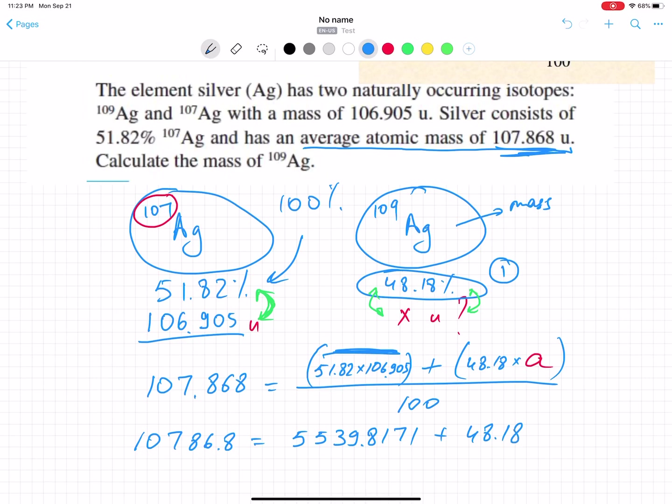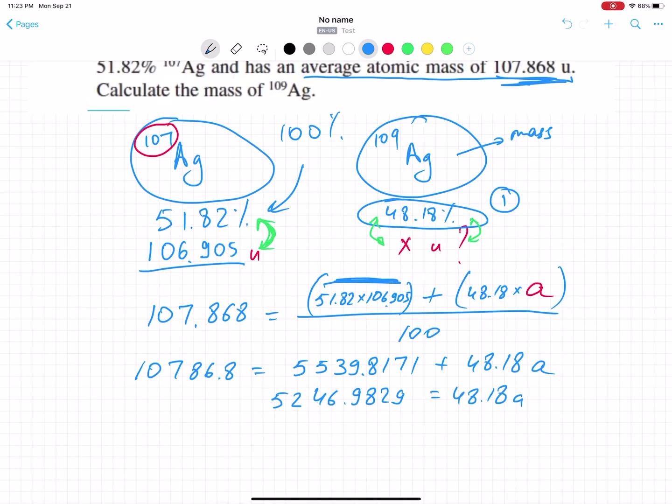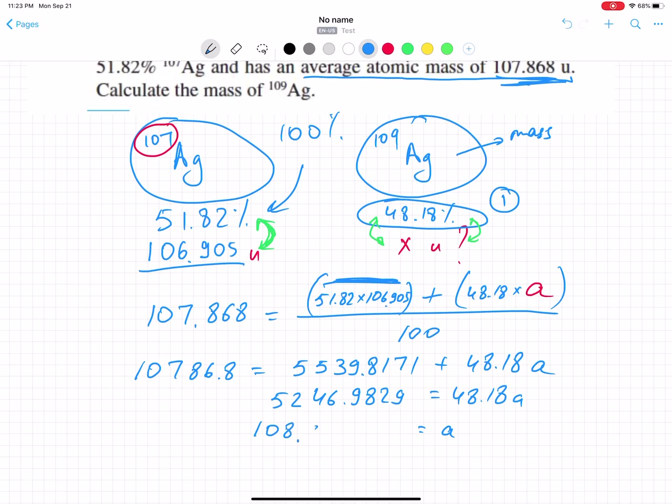Now you will subtract that from the left side: 52,469.829 equals 48.18a. And now you can find 'a' by just dividing by 48.18. You will get the huge number: 108.903754...